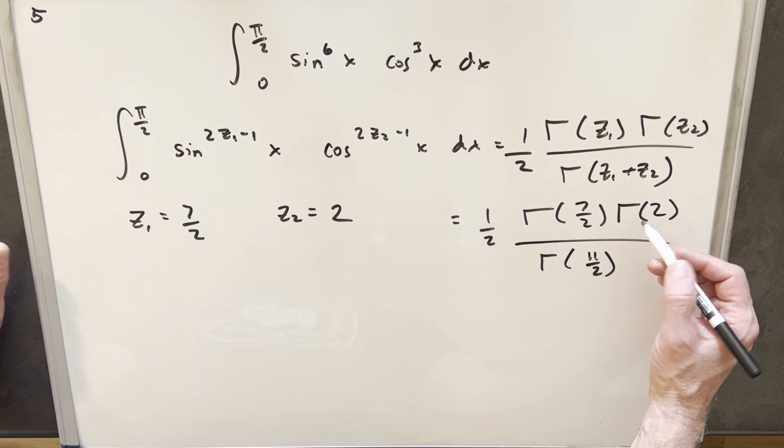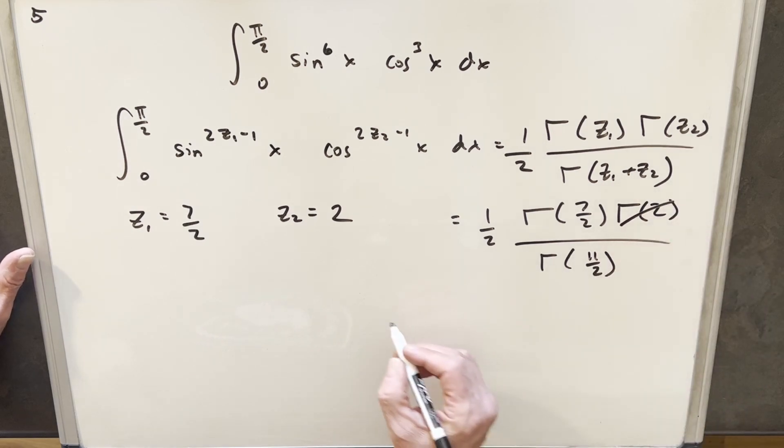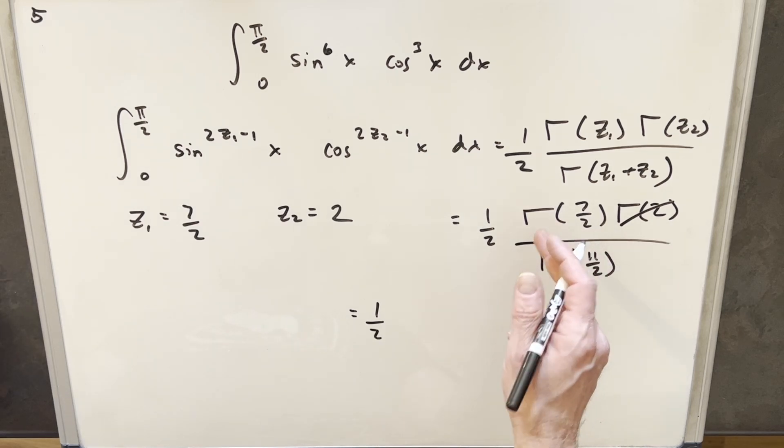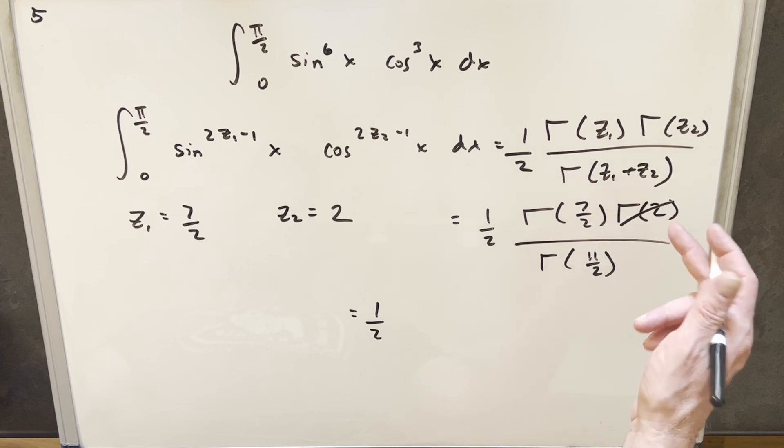Now Γ(2) is just 1 factorial, so we can cancel that one off. Γ(7/2) is going to be (5/2)! because the gamma is 1 more. So we subtract 1 from 7/2 to get 5/2. So (5/2)! We'll write that here.